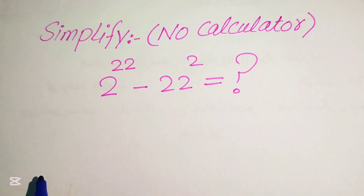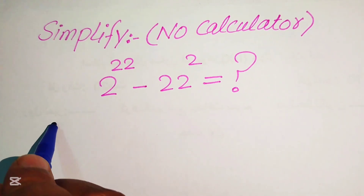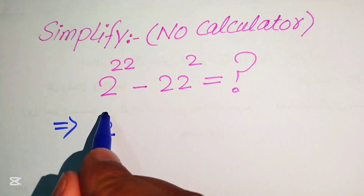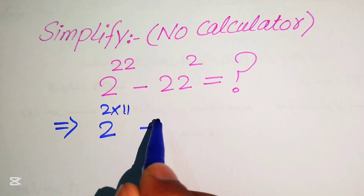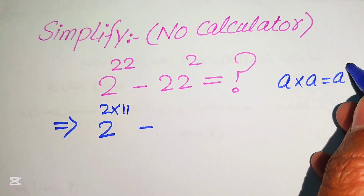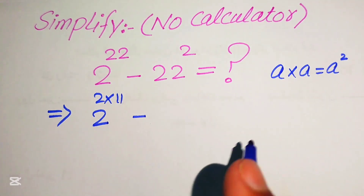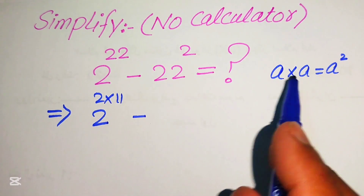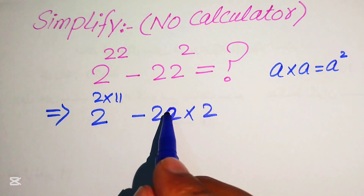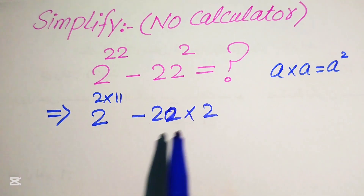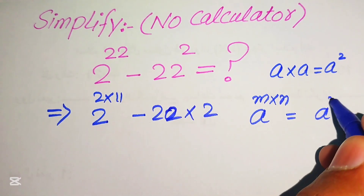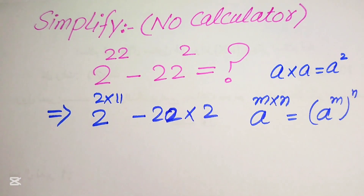First, we rewrite this algebraic expression. We write 22 as 2 times 11. Also, recall that a multiplied by a equals a squared, so we can write a squared in the form of a multiplied by a. According to this rule, we write 22 squared in the form of 22 multiplied by 22. We will also apply the exponent law: a to the power of m multiplied by n equals a to the power of m, to the power of n.